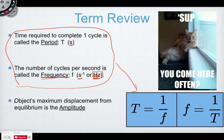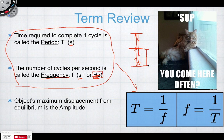An object's maximum displacement from equilibrium is called amplitude. If an object starts at equilibrium, goes to a maximum position before turning around, then comes back, the distance from equilibrium to that maximum displacement is the amplitude. More amplitude means more energy — that's the general relationship.